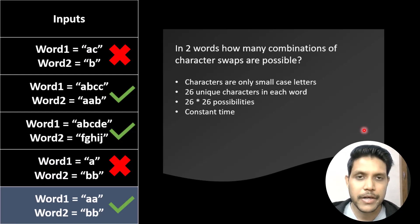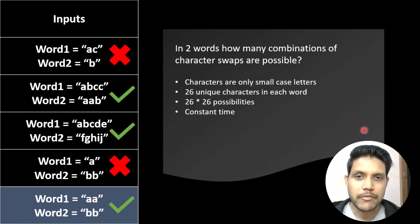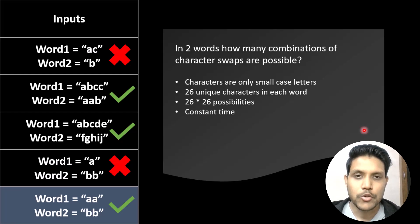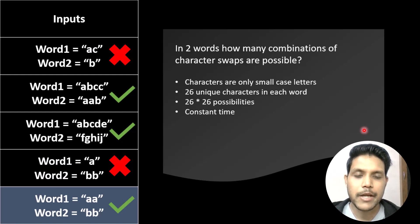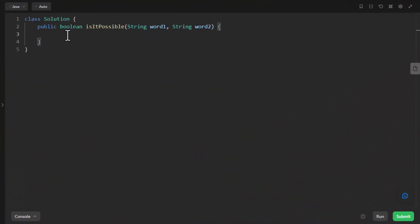I recommend you try solving this problem on your own using the understanding we've built so far. If you face any issues, you can come back to the video. Now it's time to code this approach. We first create the occurrence array for both words — an array of size 26 where each index holds the occurrence count of each character present in the word. We'll write a method for that.